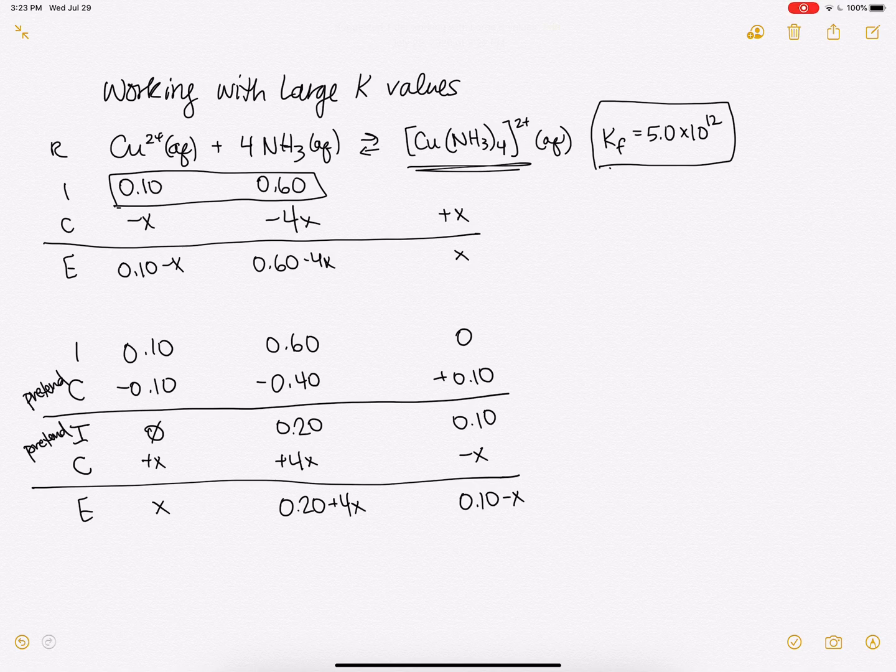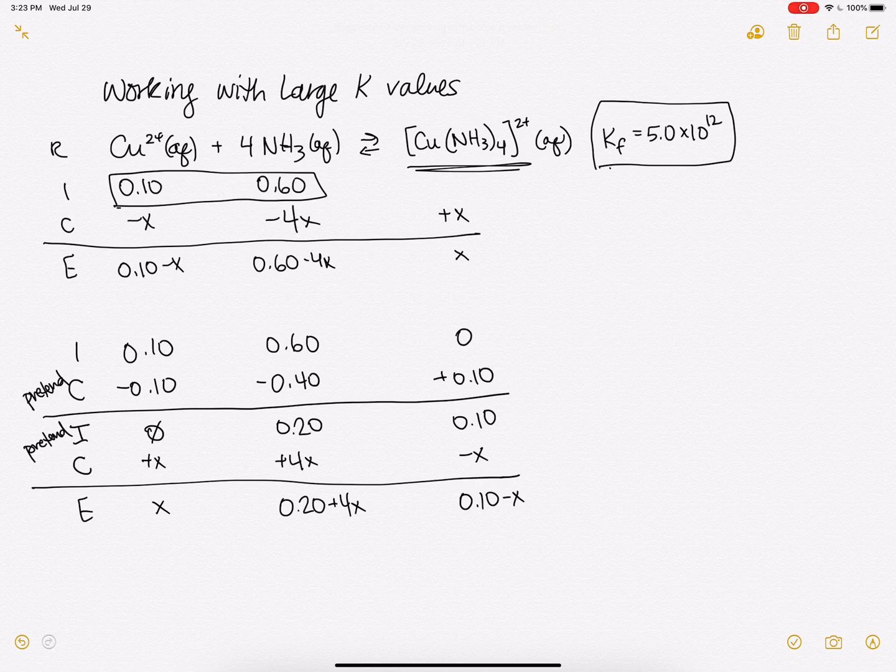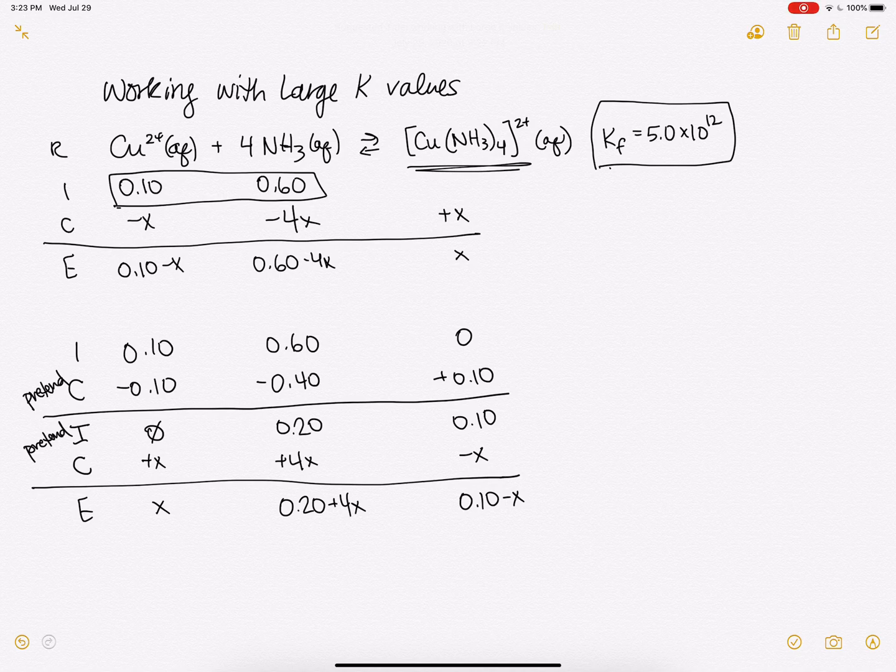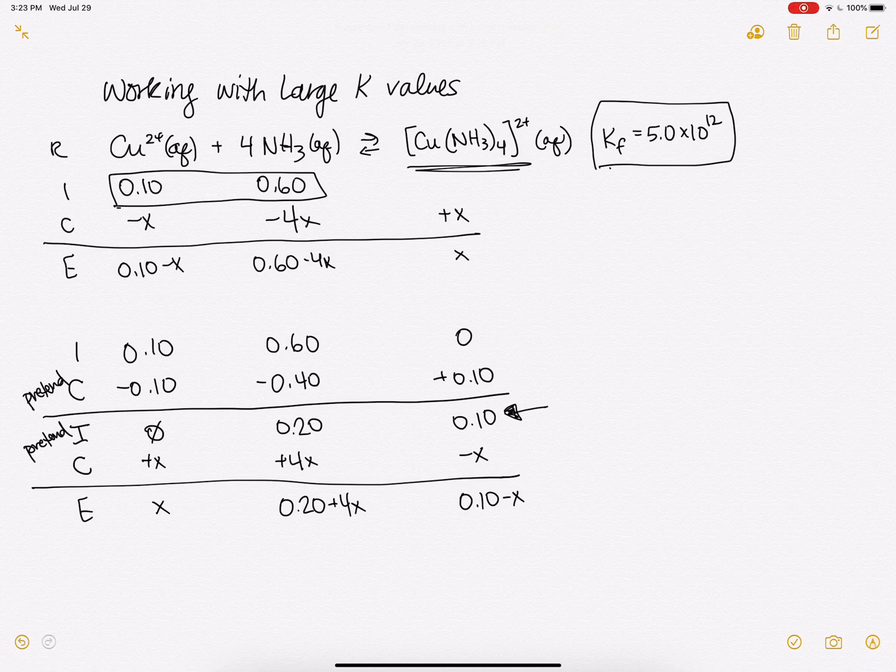And now, can we use the small X approximation? Well, actually, yes, we can. Because K is very large, and we know that we have mostly products in our new initial conditions, these fake initial conditions that we made up. We had mostly products, so we think that the change of X will actually be small.